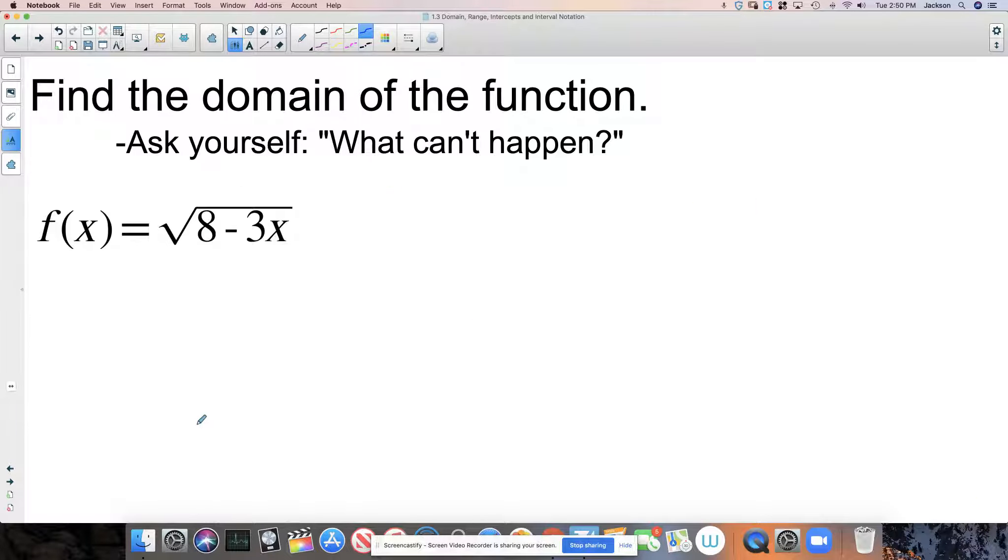Okay, radicals, or square root symbols like this, are also indicators that the domain is going to get messed with. And we talked about how you can't take the square root of a negative number.